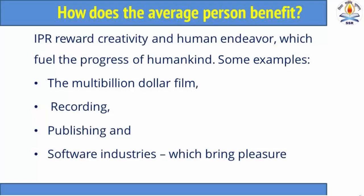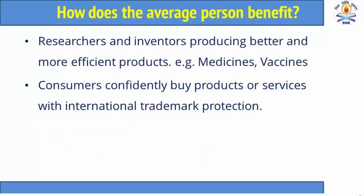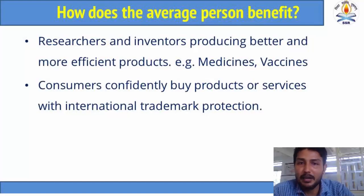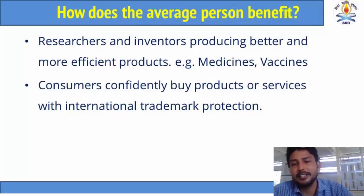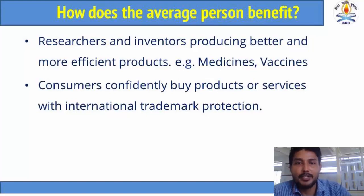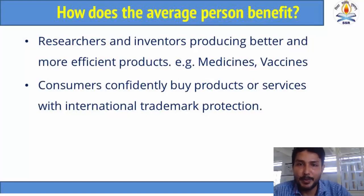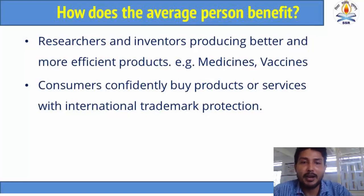That is why protection of intellectual property is a must. Researchers and inventors produce better and more efficient products like medicine and vaccines. Any new drug which is invented must get IPR — intellectual property rights. For example, if someone invents a vaccine for COVID-19, then they should get benefit out of that, because they may have spent a lot of money, effort and time on the innovation. Because of IPR, consumers can confidently buy products or services because of their trademark or IPR protection — it guarantees the quality of the product.